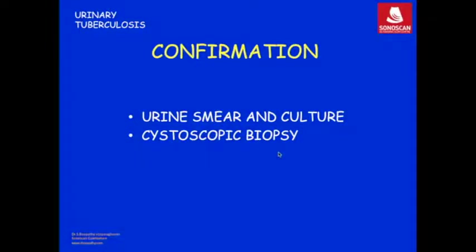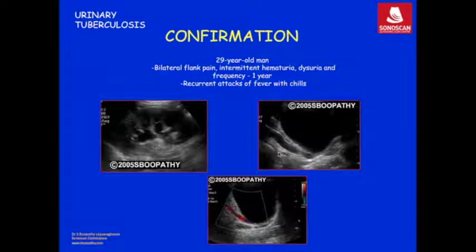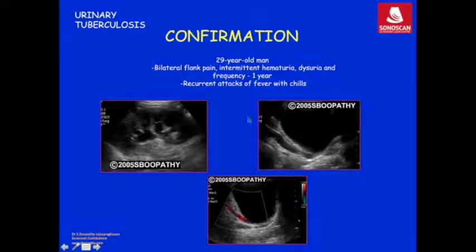To confirm urinary tuberculosis, urine smear for Mycobacterium tuberculosis and culture of urine for Mycobacterium tuberculosis are the proofs. Alternatively, a cystoscopic biopsy of the bladder urothelium looking for typical granulomas can be performed. Sometimes confirmation may not be straightforward — as an example, a 29-year-old man presented with bilateral flank pain, intermittent hematuria, dysuria, and frequency lasting for one year with recurrent attacks of fever with chills.